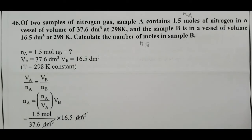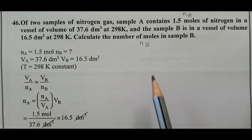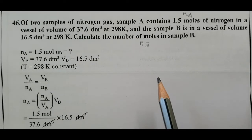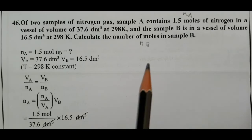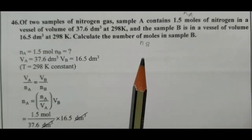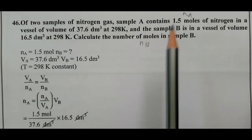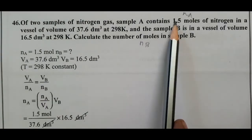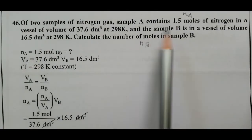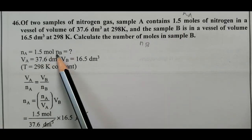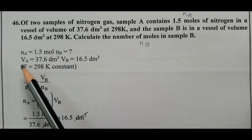What is Avogadro's Hypothesis? Equal volumes of all gases under the same conditions of temperature and pressure contain equal number of molecules. NA = 1.5 moles, NB = ? VA = 37.6 decimeter cube, VB = 16.5 decimeter cube.